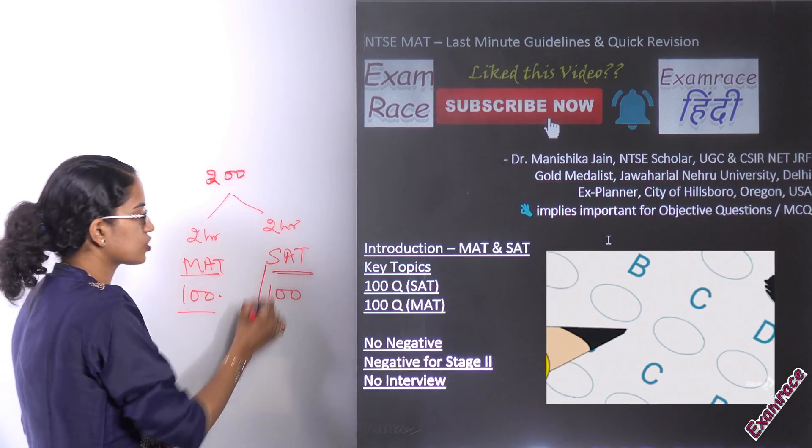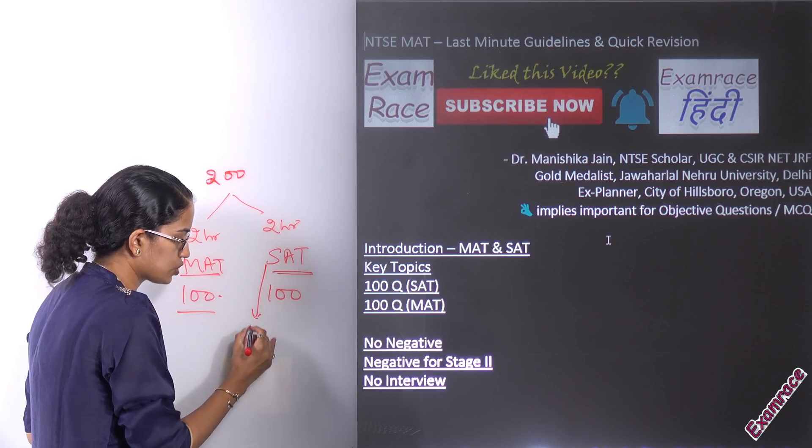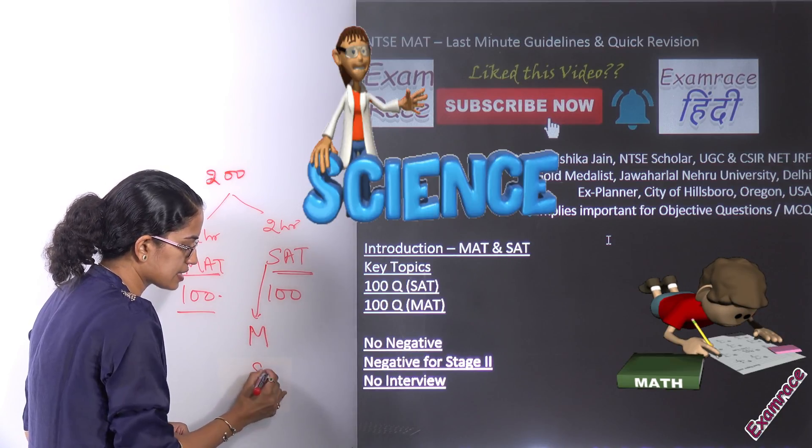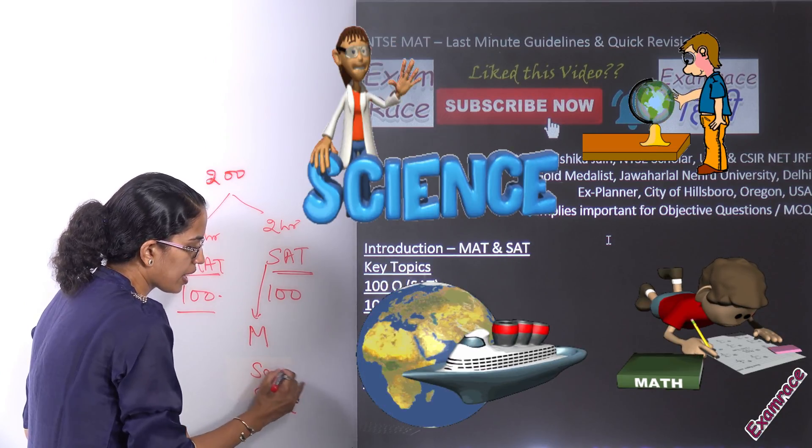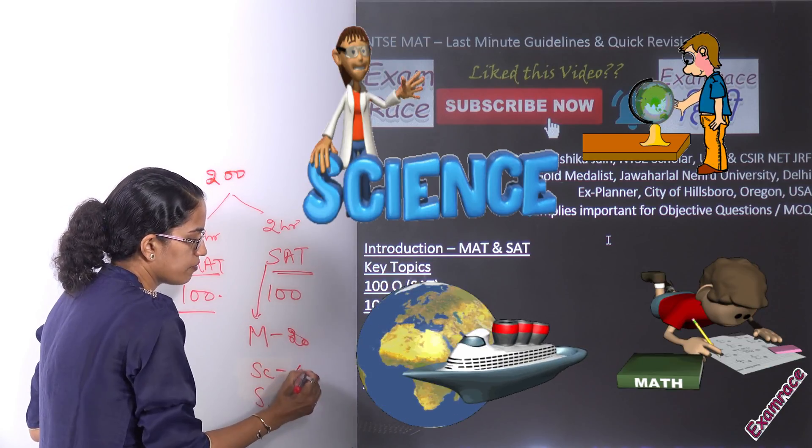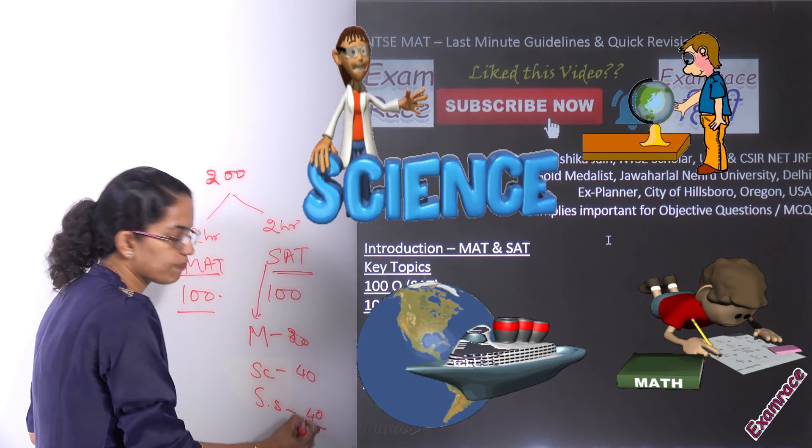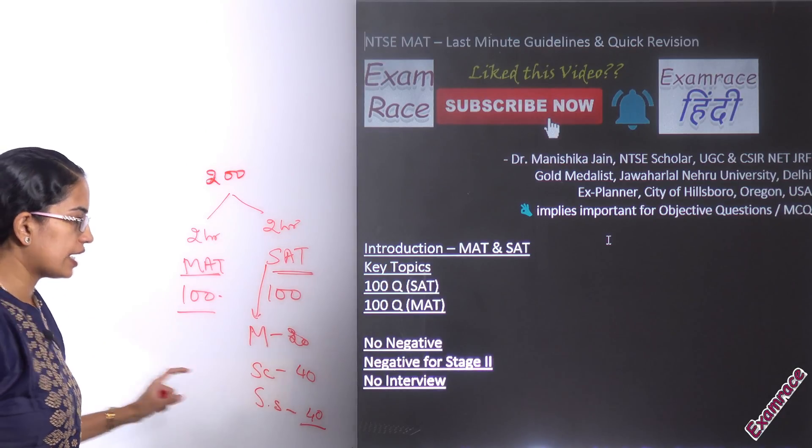Scholastic aptitude includes three sections: math, science and social studies. Under maths you would have around 20 questions. For science and social studies you would have 40 each, accounting to 100 questions.